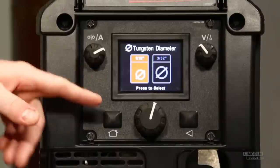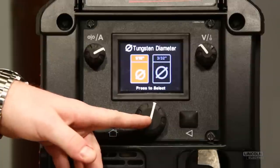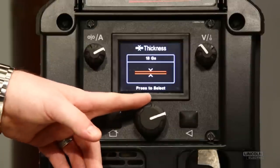We're going to choose tungsten diameter, 1 16th or 3 32nd. Today, we're using 1 16th. And our material thickness.